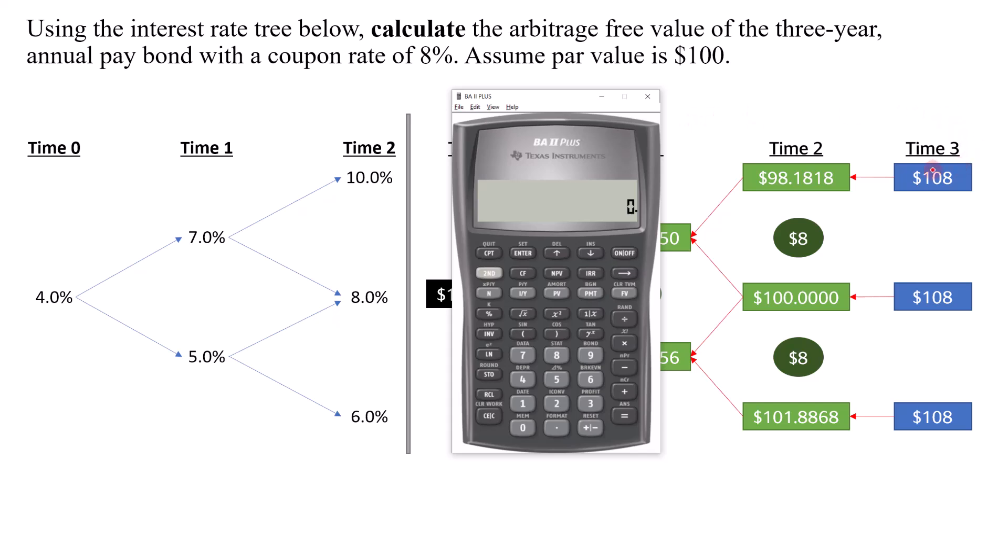So to start off from Time 3, from the last cash flow here, we have $100 par plus the coupon of $8 here. So I'll start from the top. What I'll do is I'll press 108 and then I will divide by 1.1. So that gives me 98.1818. Now I'm going to store this in a systematic way. I'm going to press store 9. So I purposely follow the shape of the tree and I try to mimic it on the calculator.